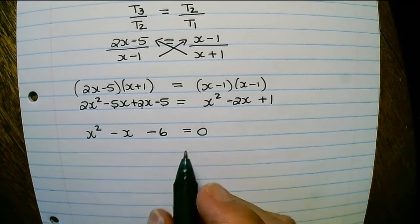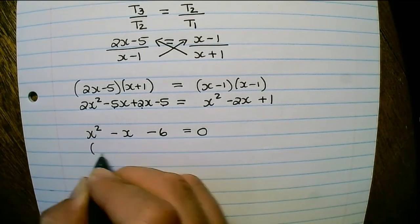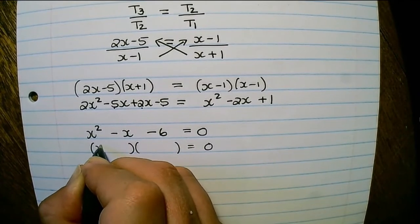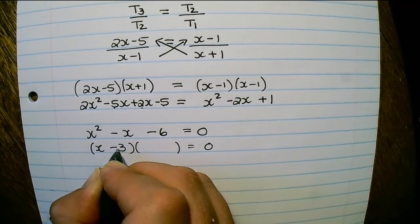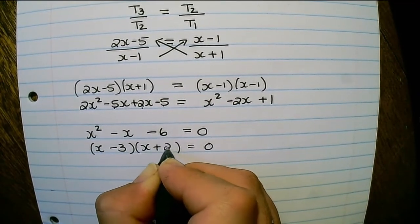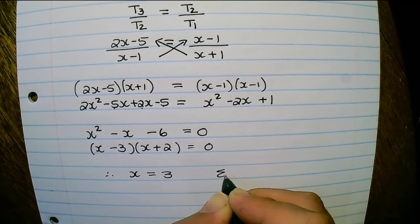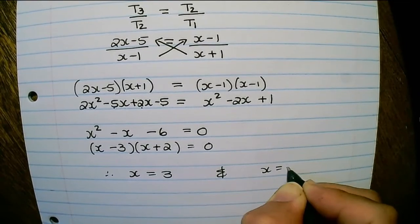And now because it's in standard form we can factorize. So it'll be x minus 3 and x plus 2. Therefore x is equal to 3 and x is equal to negative 2.